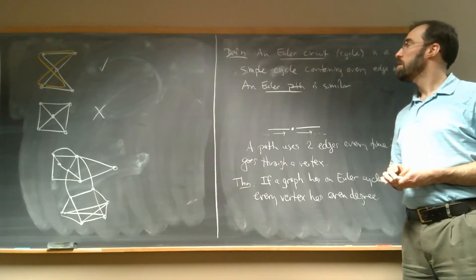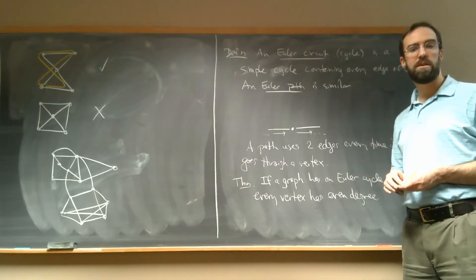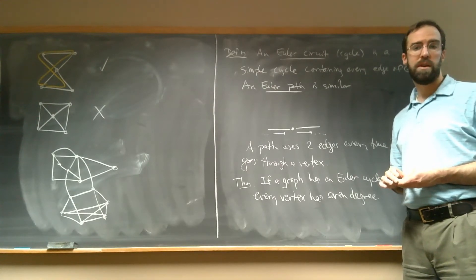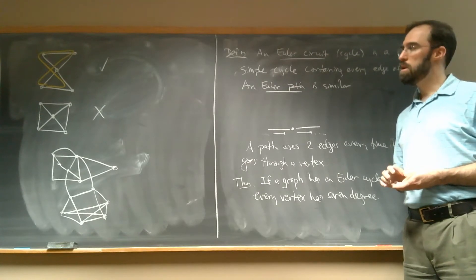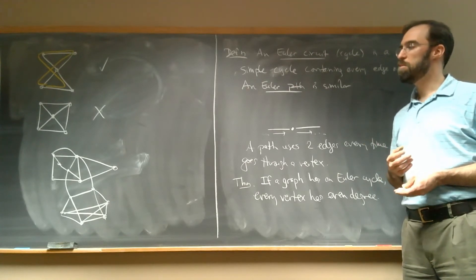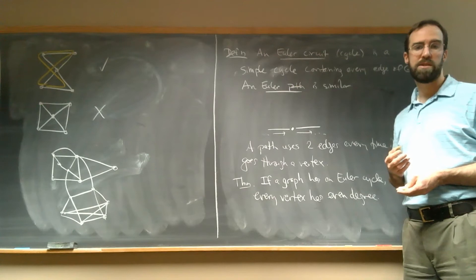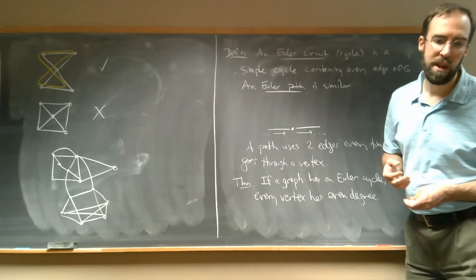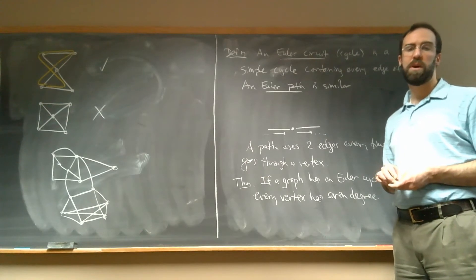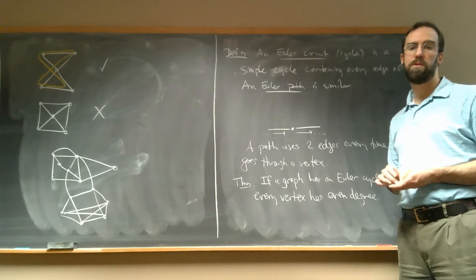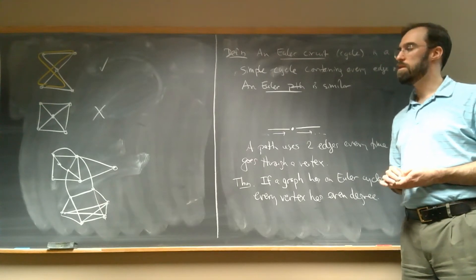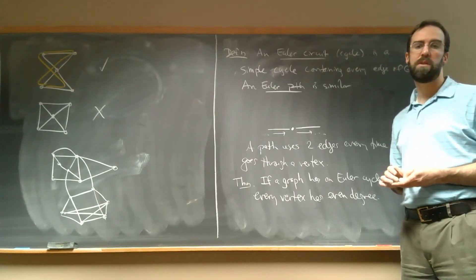Interestingly, Euler didn't prove this in his paper, and it's not clear why. It's possible that he thought it was obvious and didn't bother. No one really knows. But in any case, it wasn't formally proved until about 140 years later, in 1871, by a German mathematician named Karl Hierholzer, who unfortunately died very young, so no one's really ever heard of him.